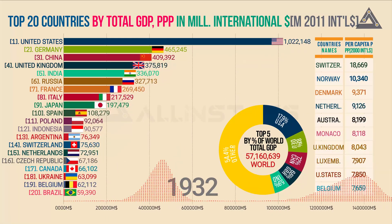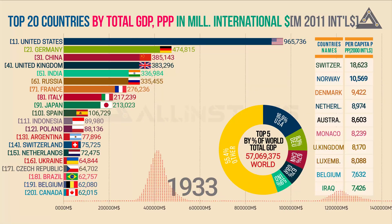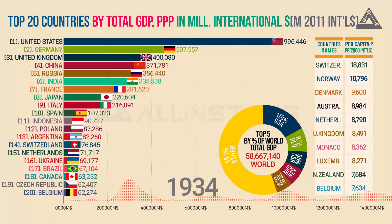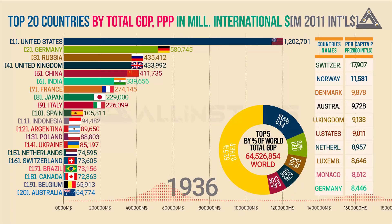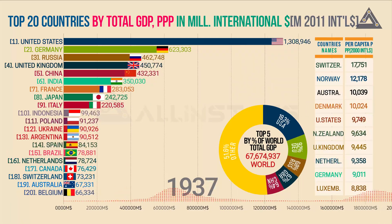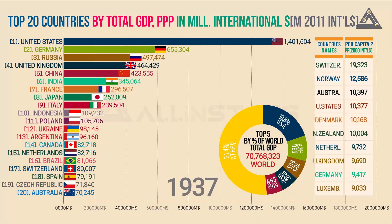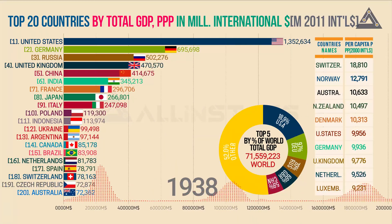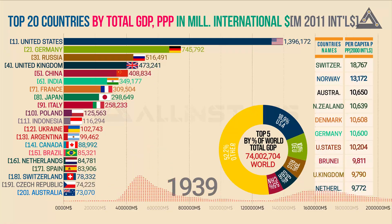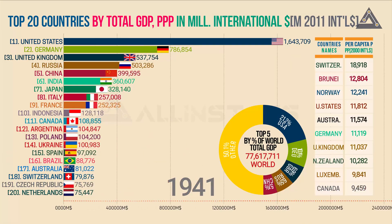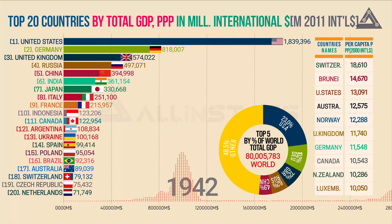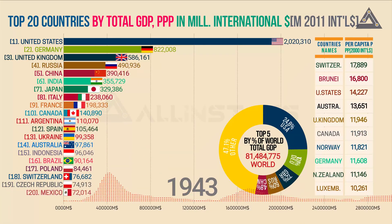The Industrial Revolution started in England in the 18th century and from there spread to other parts of the world. This Industrial Revolution ended the Malthusian economy and made it possible for a country to leave poverty behind.